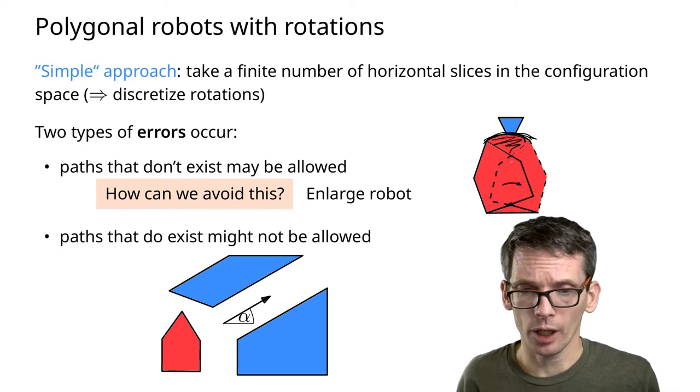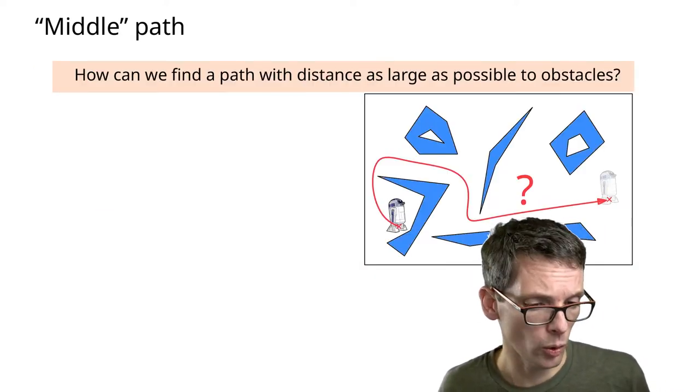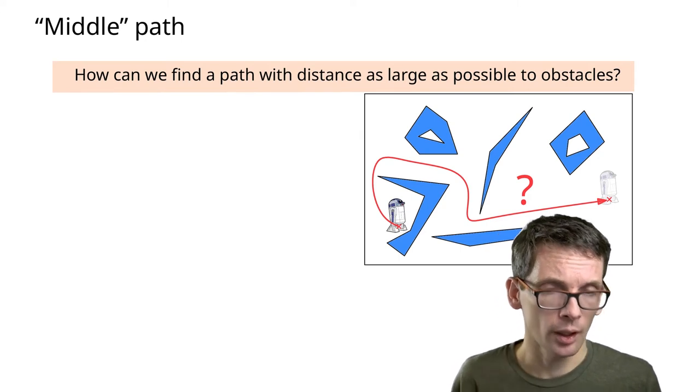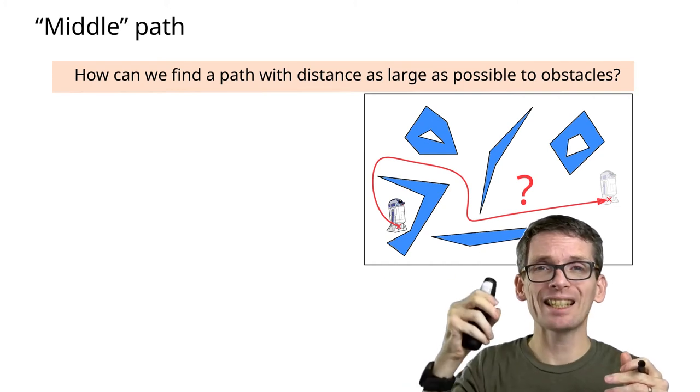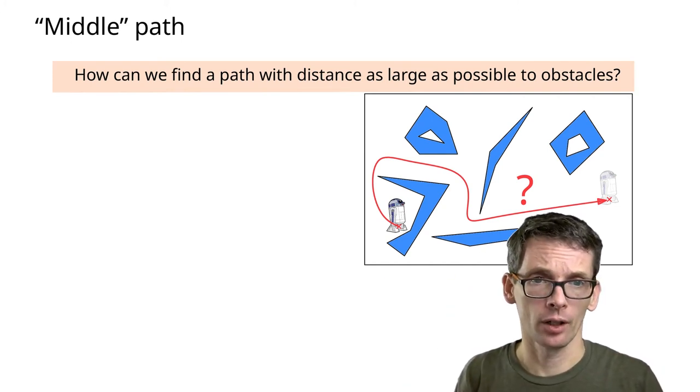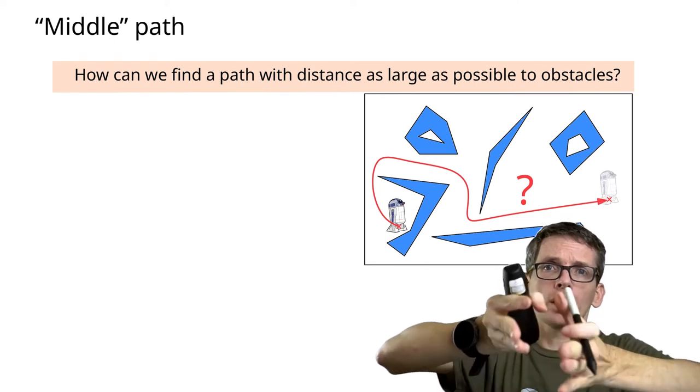I would see that in one of the two slices. So far so good. That's what I wanted to say about rotations. Yet another question in terms of motion planning. Let's say I have a robot and I don't want to simply move it between obstacles, but I always want to keep the distance to the obstacles as large as possible.